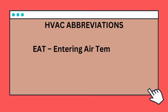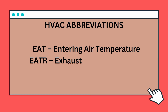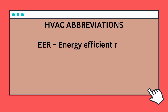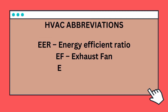EAT — Entering Air Temperature. EATR — Exhaust Air Transfer Ratio. EER — Energy Efficient Ratio. EF — Exhaust Fan.